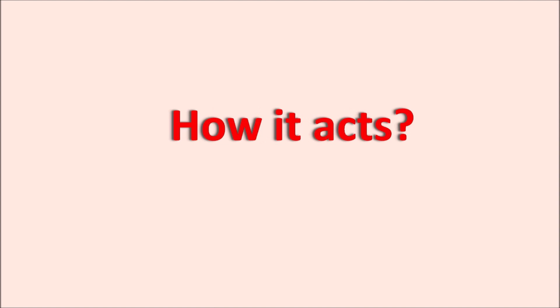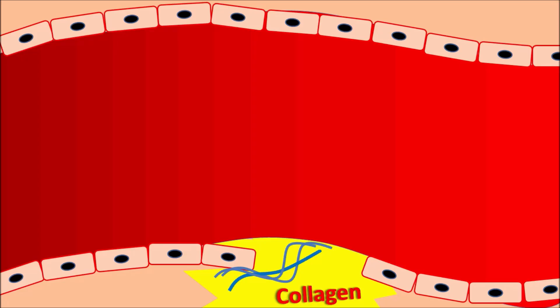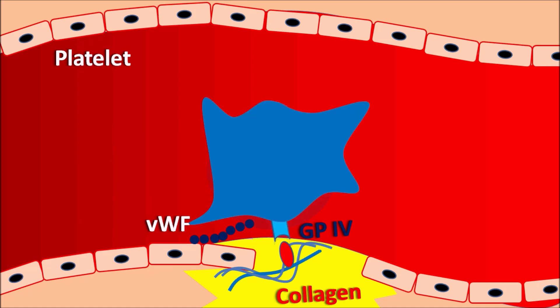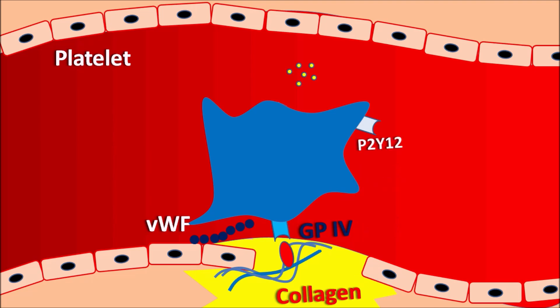When there is damage to a blood vessel, collagen fibers attach and stimulate the expression of von Willebrand factor. Von Willebrand factor is responsible for the attachment of platelets. The platelets attach to von Willebrand factor and then bind with glycoprotein 4. Once bonded, the platelets are activated, change their shape, and release mediators. One important mediator is ADP, which is released from the platelets and acts on the P2Y12 receptor.